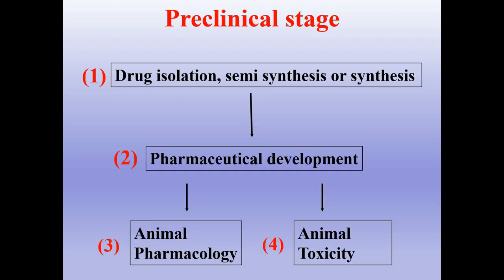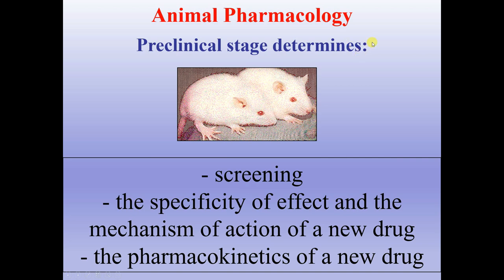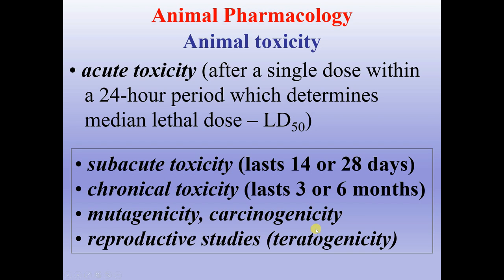The preclinical stage is one of the first stages. It is divided into drug isolation, semisynthesis or synthesis, followed by pharmaceutical development, then animal pharmacology and animal toxicity. In animal pharmacology — the preclinical stage — each compound must first be tested on animals to understand its features, safety, and activity. It determines screening, the specificity of effect, the mechanism of action, and the pharmacokinetics of the new drug. Animal toxicity is divided into acute toxicity — a single dose within a 24-hour period which determines median lethal dose (LD50).